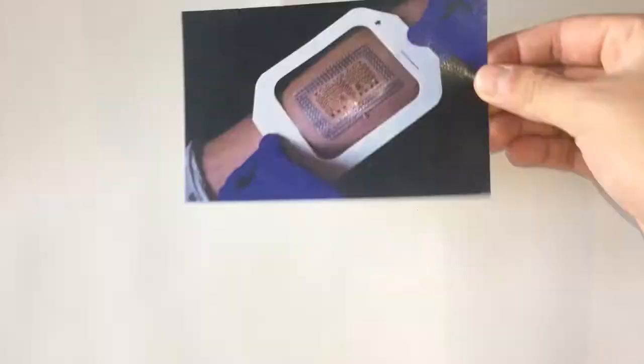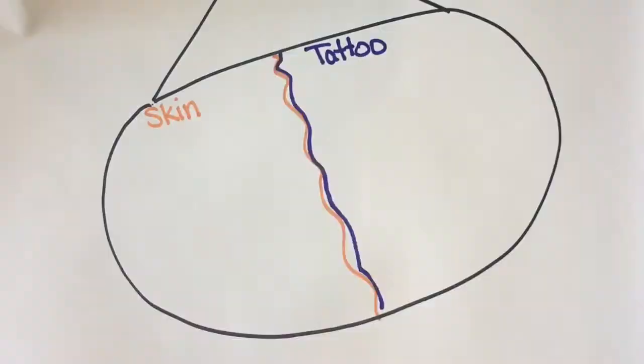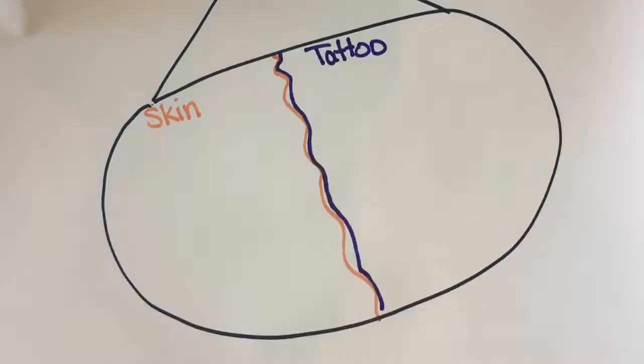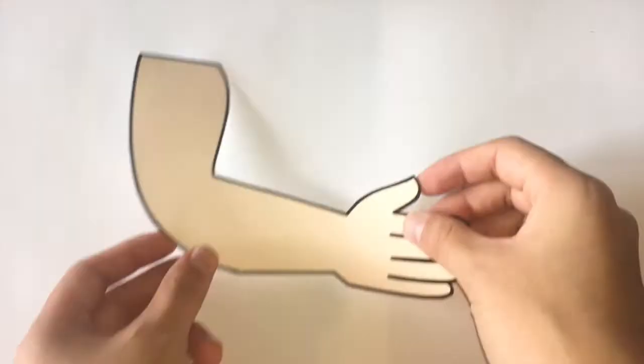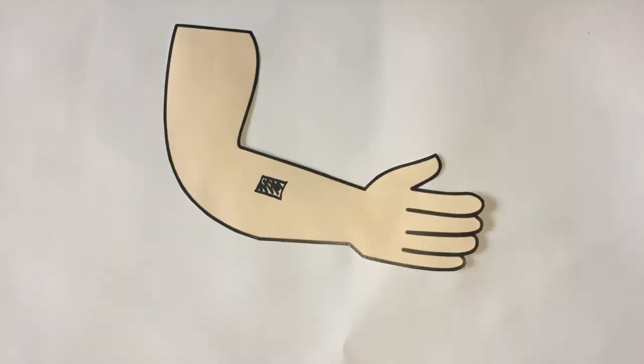Once attached, the e-tattoos are able to maintain close contact with the skin by utilizing the same force geckos use to stick their feet to smooth windows. Because negatively charged electrons move about randomly, sometimes parts of a molecule have more electrons and therefore are more negatively charged than other parts. Van der Waals interactions occur due to a natural attraction between the positive and negative regions of molecules that are close together.